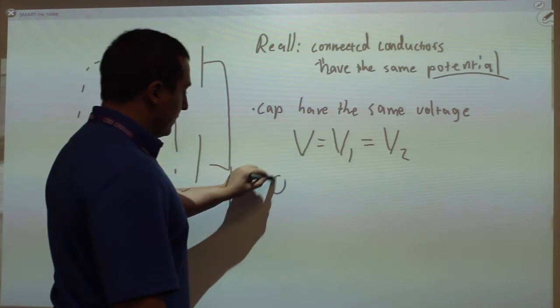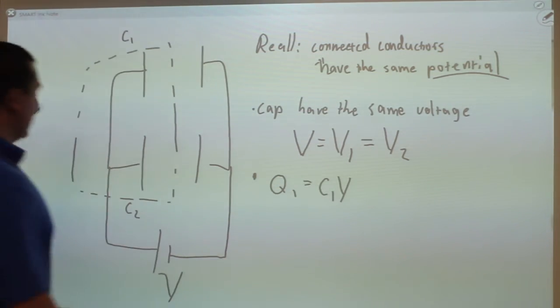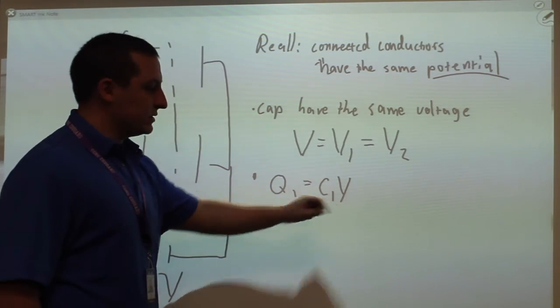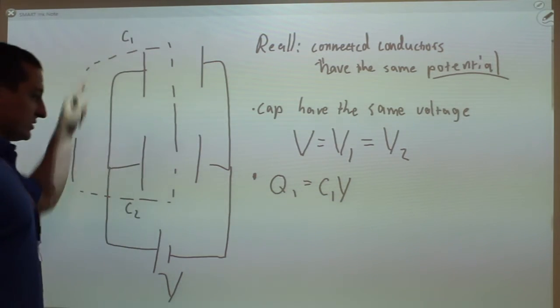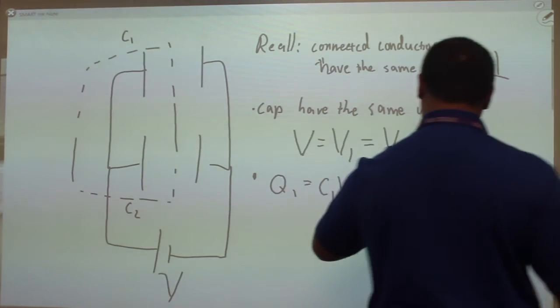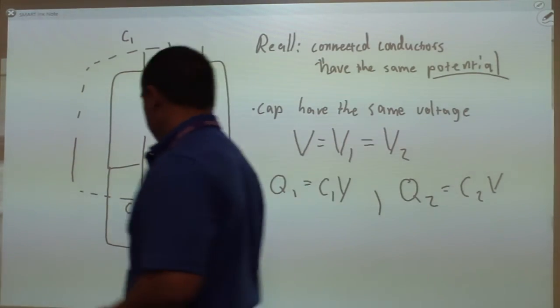But they could have different charges on them, right? I'm using the capacitance equation here. That capacitance is charge divided by the voltage. Since the capacitances are different, the charges on the two capacitors are different, because the voltages are the same.